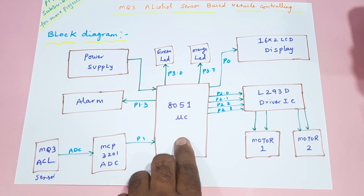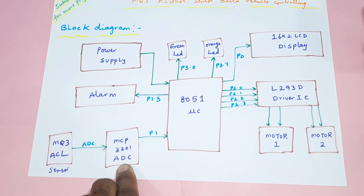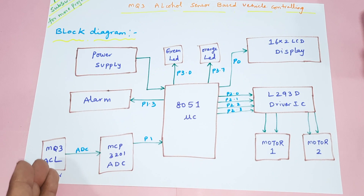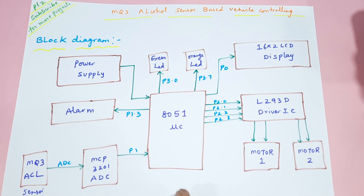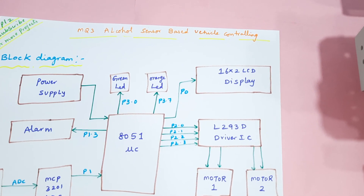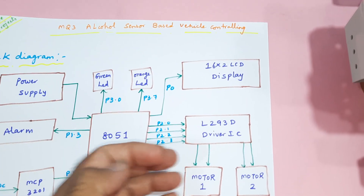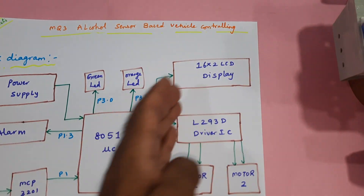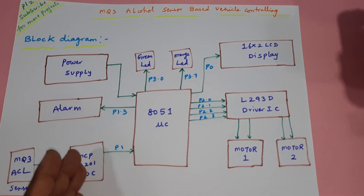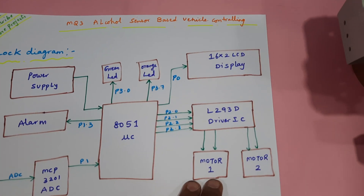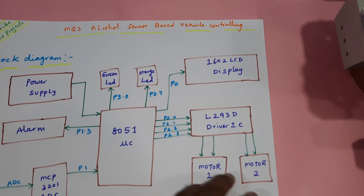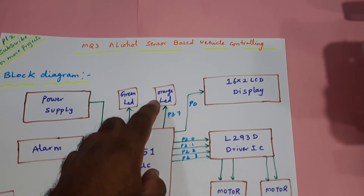The 8051 has no internal ADC, that's why we are using the MCP3201 ADC — a successive approximation 12-bit ADC. We are sensing the percentage of alcohol and that value is displayed on the LCD. Whether it is 20%, 30%, or 40%, however much alcohol is detected, that value is displayed on the LCD display. If alcohol reaches 100%, the engine should be stopped.